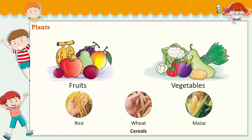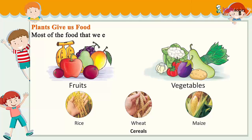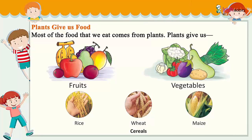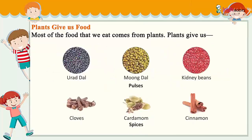Plants give us food. Most of the food that we eat comes from plants. Plants give us fruits, vegetables, rice, wheat, maize, and cereals. We also get pulses from plants such as urad dal, moong dal, and kidney beans. Plants also give us spices like cloves, cardamom, and cinnamon.